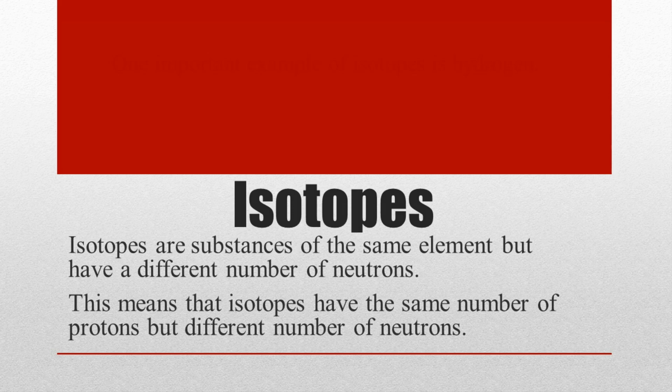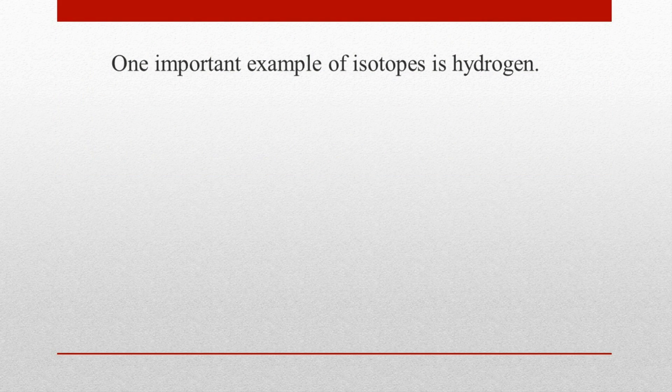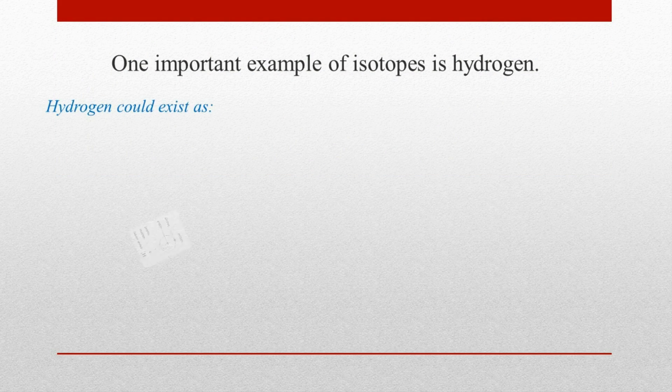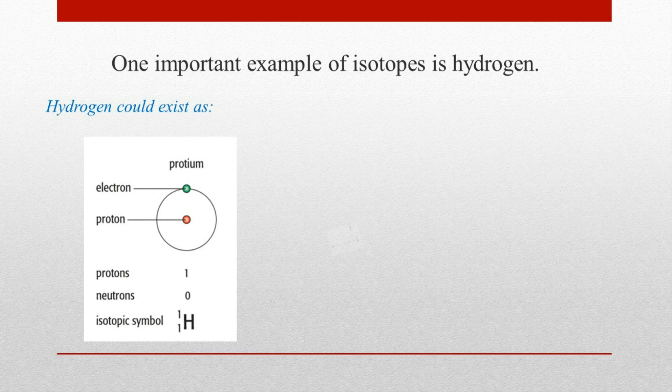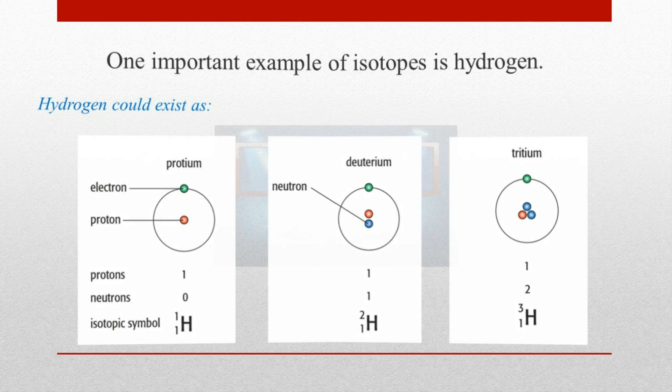One important example of isotopes is hydrogen. Hydrogen could exist as protium, deuterium, and tritium.